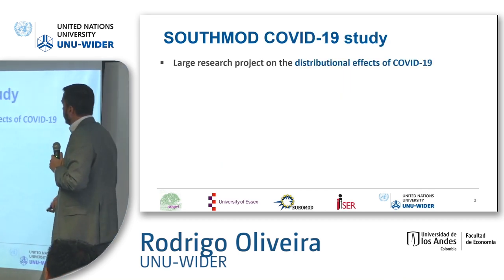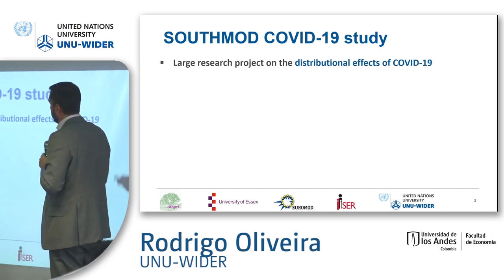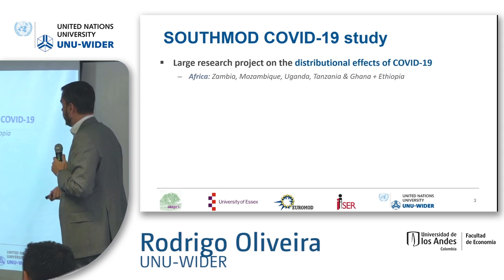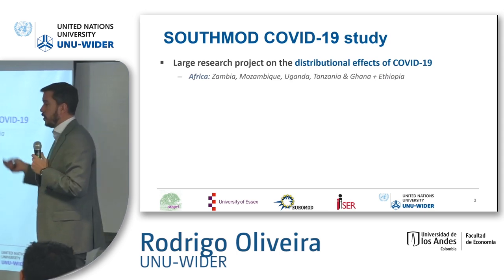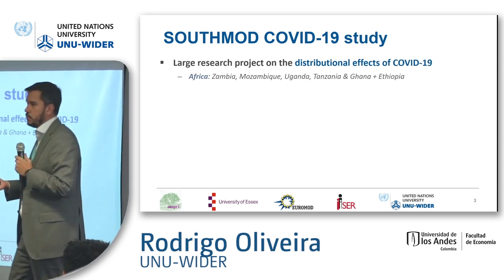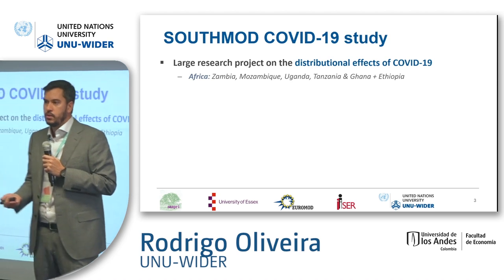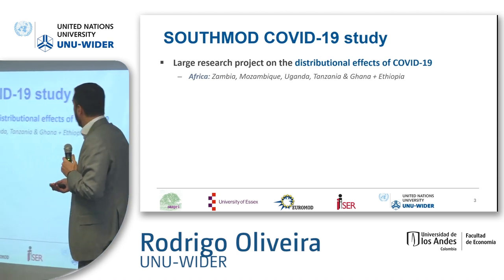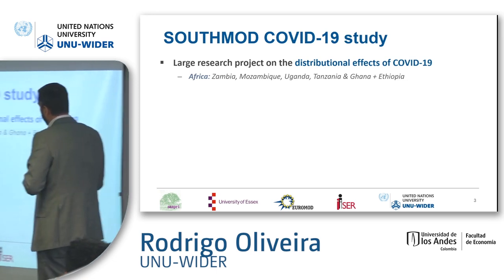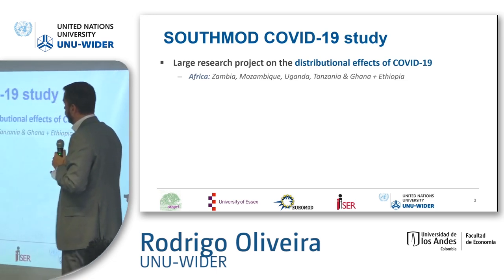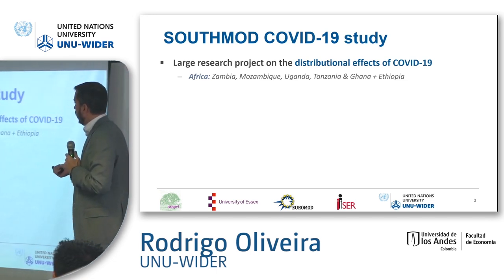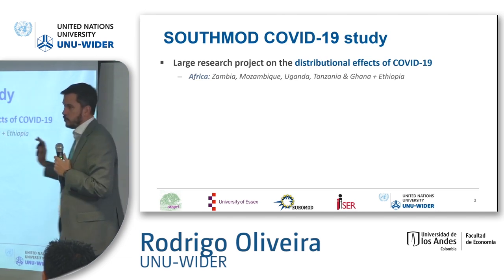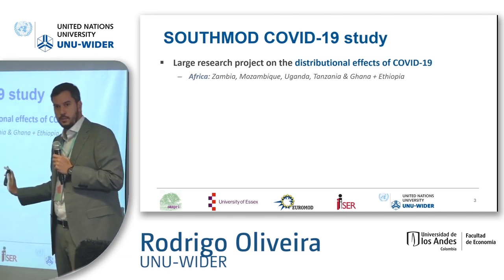The COVID-19 study was a large research project about the distributional effects of COVID-19, the role of the existing tax and benefit system, and the new discretionary policies created amid the pandemic. In this project specifically, we work with Zambia, Mozambique, Uganda, Tanzania, Ghana, and recently Ethiopia, though we will not show results for Ethiopia in this presentation.